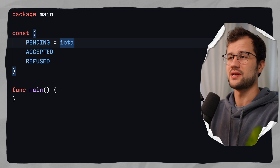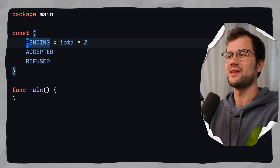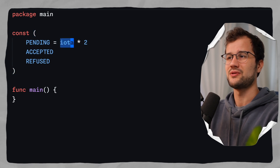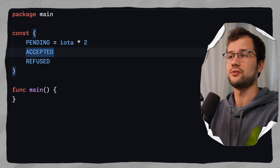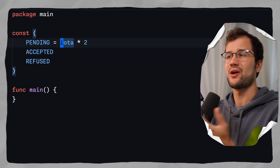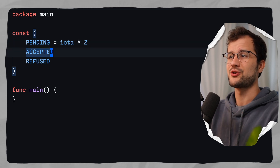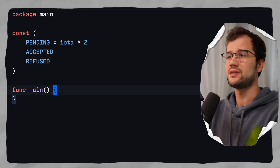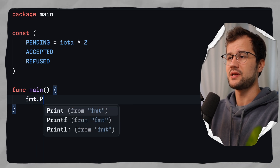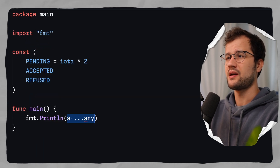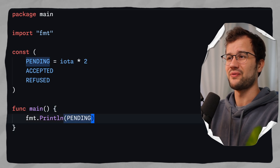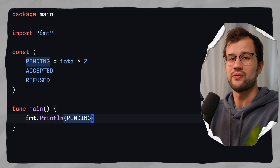Obviously, we can add operations here as well. We can say iota times 2, for instance. So in the end, pending is 0 times 2 which is 0, and accepted is 1 times 2. This iota keyword is kind of like an index iterator. This is how we can actually define an enum. To use it, we can just say fmt.Println(pending), and this is basically it - we can make use of this enum inside our real codebase.